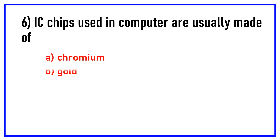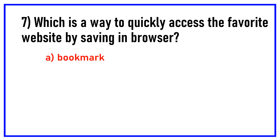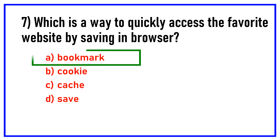IC chips used in computers are usually made of. Options are: chromium, gold, lead, silicon. Which is a way to quickly access a favorite website by saving it in a browser? Options are: bookmark, cookie, cache, save. Answer: Bookmark.